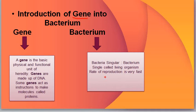Bacterial cells divide from 1 to 2, 2 to 4, 4 to 6, 6 to 8, and so on — continuously increasing the number of cells. So in today's topic, we look at bacteria as the organism into which we insert the gene.